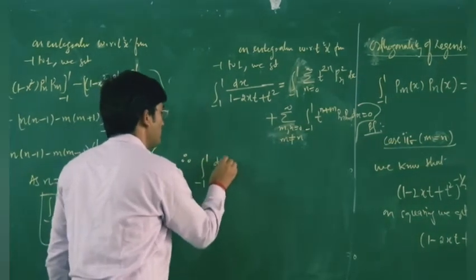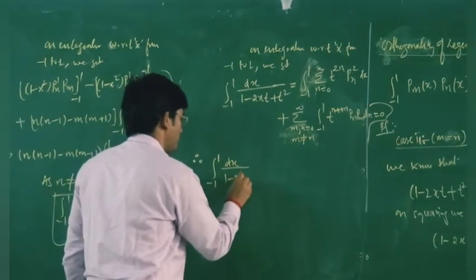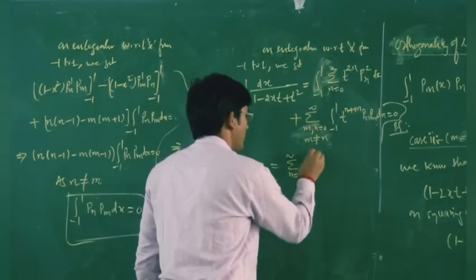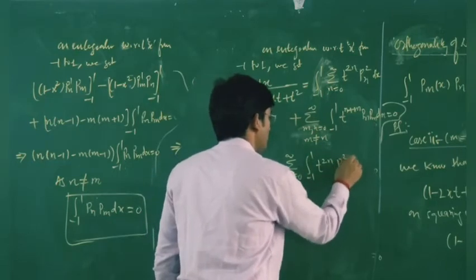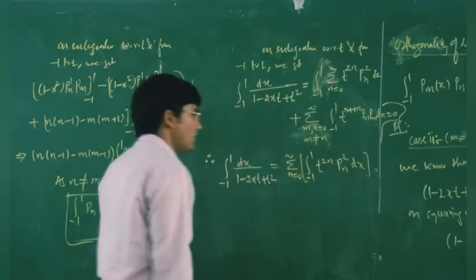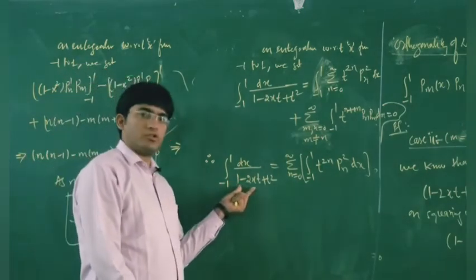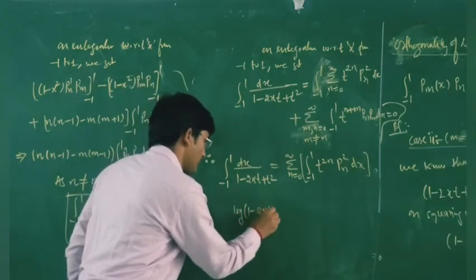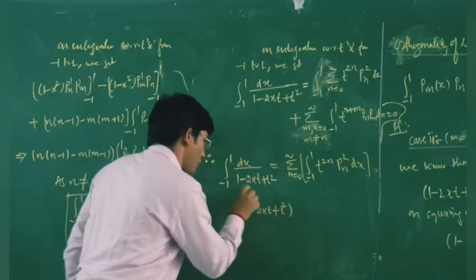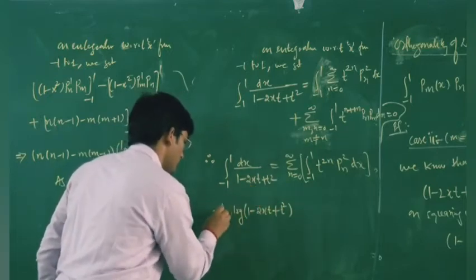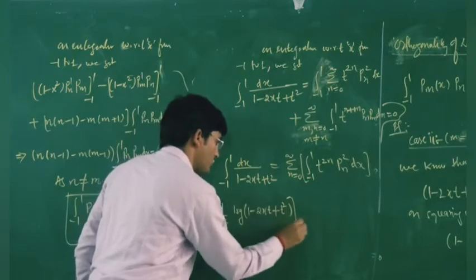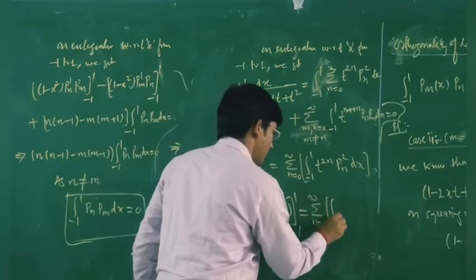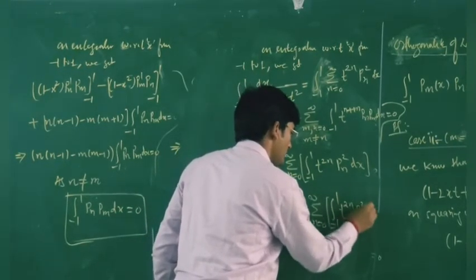So we have the integral from minus 1 to 1 of (1 - 2xt + t²)^(-1) dx equals the summation from n = 0 to infinity of t^(2n) times the integral from minus 1 to 1 of P_n² dx. The left-hand side integrates using log: the coefficient of x is -2t, so we get (-1/(2t)) times [log(1 - 2xt + t²)] evaluated from x = minus 1 to x = 1.